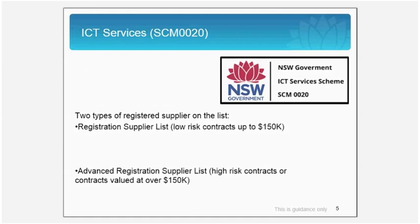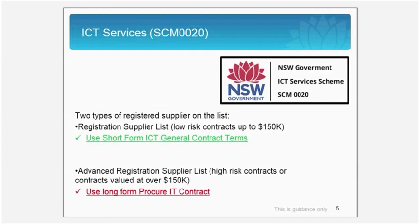When engaging with suppliers on low-risk contracts, you should use the short-form ICT general contract terms. But when you engage suppliers on high-risk contracts, you will need to use the long-form Procure IT contract.